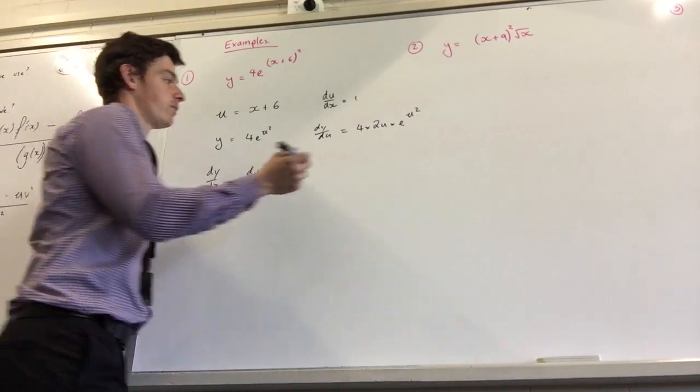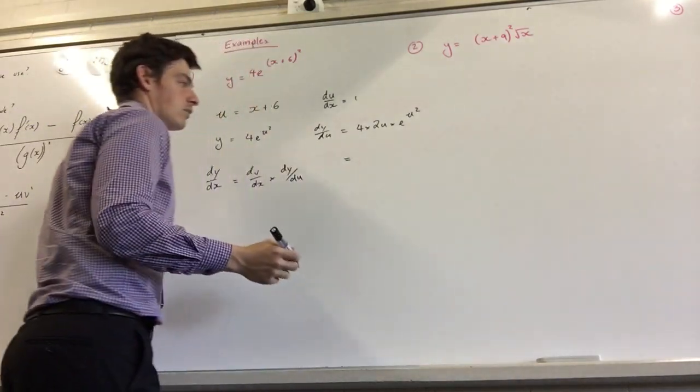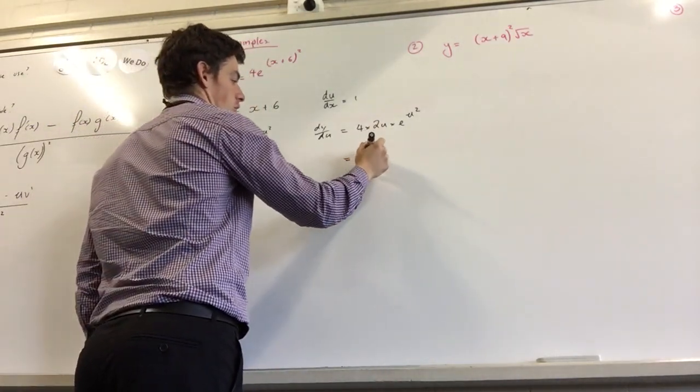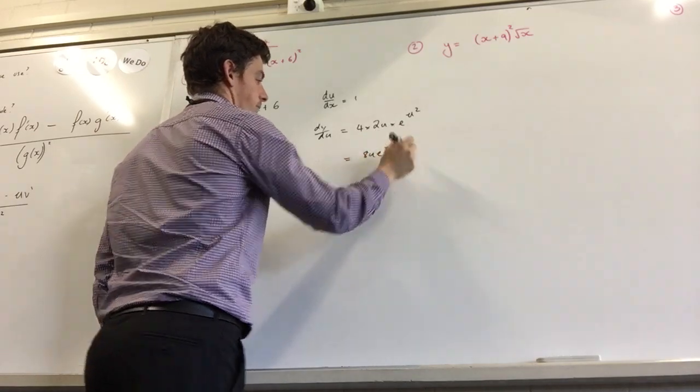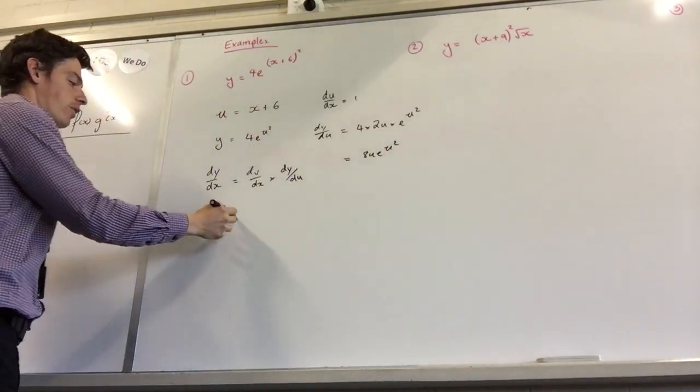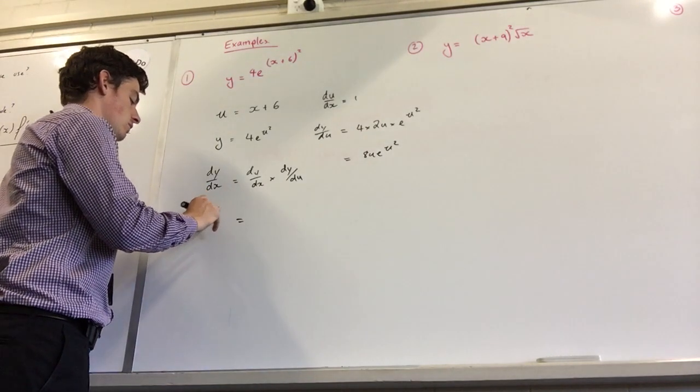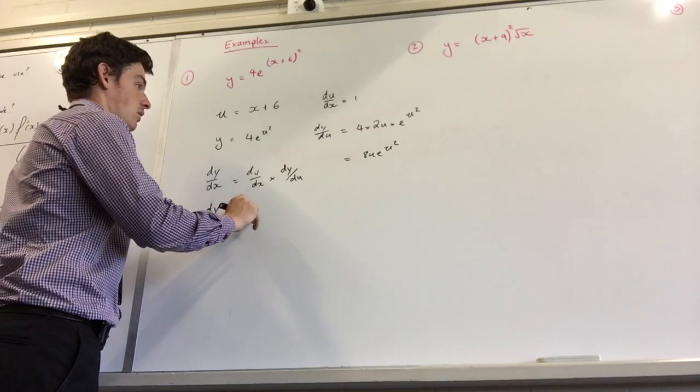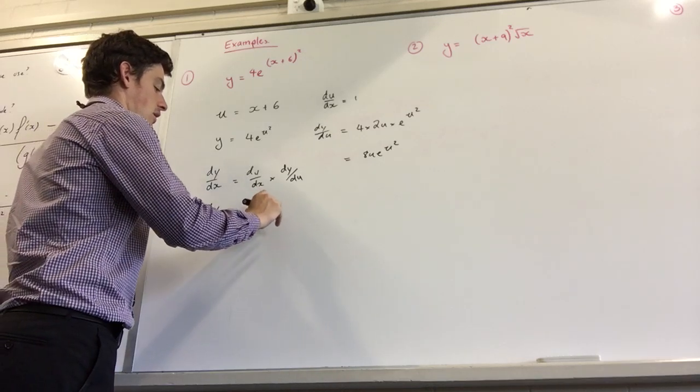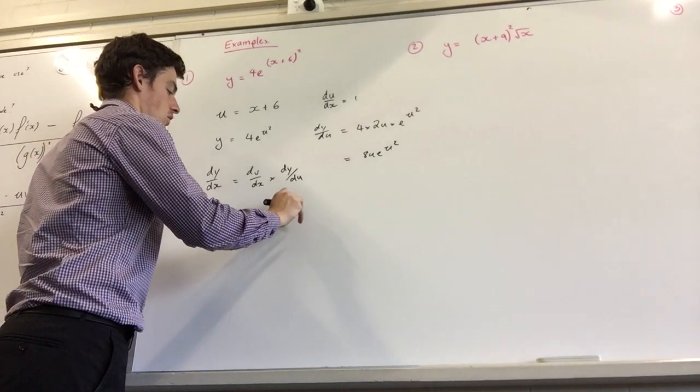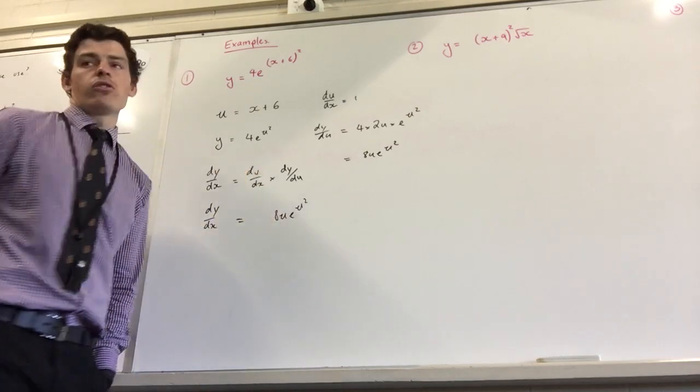Which equals what? 8u e to the u squared. So in this line here what do we write? dy/dx equals 8u e to the u squared. I could write 1 times but I don't need to.